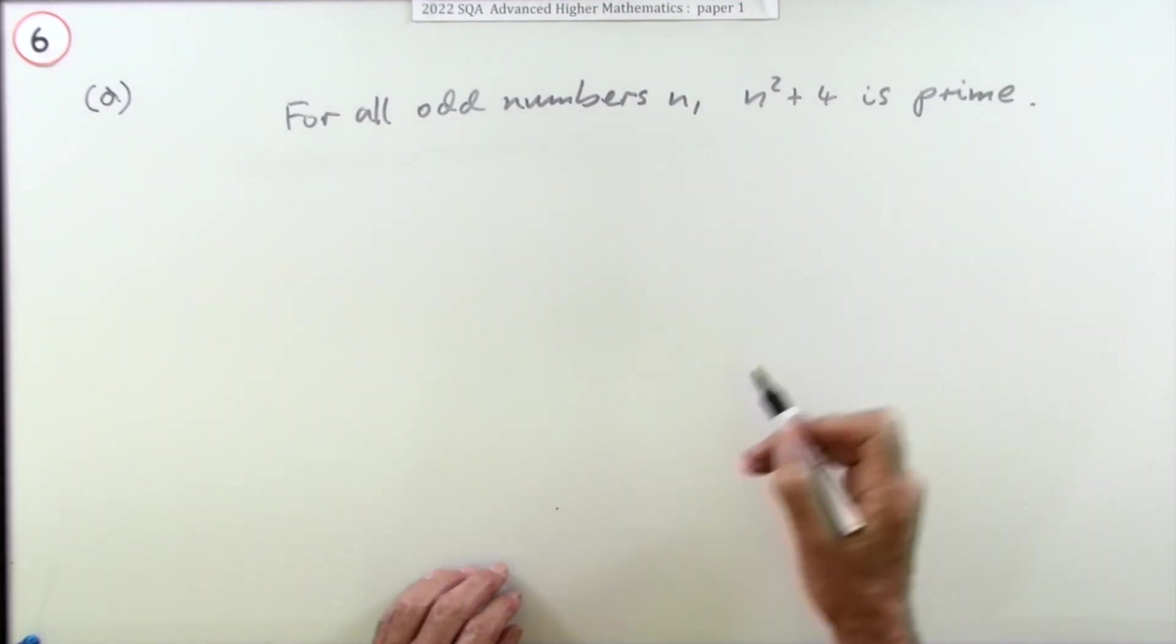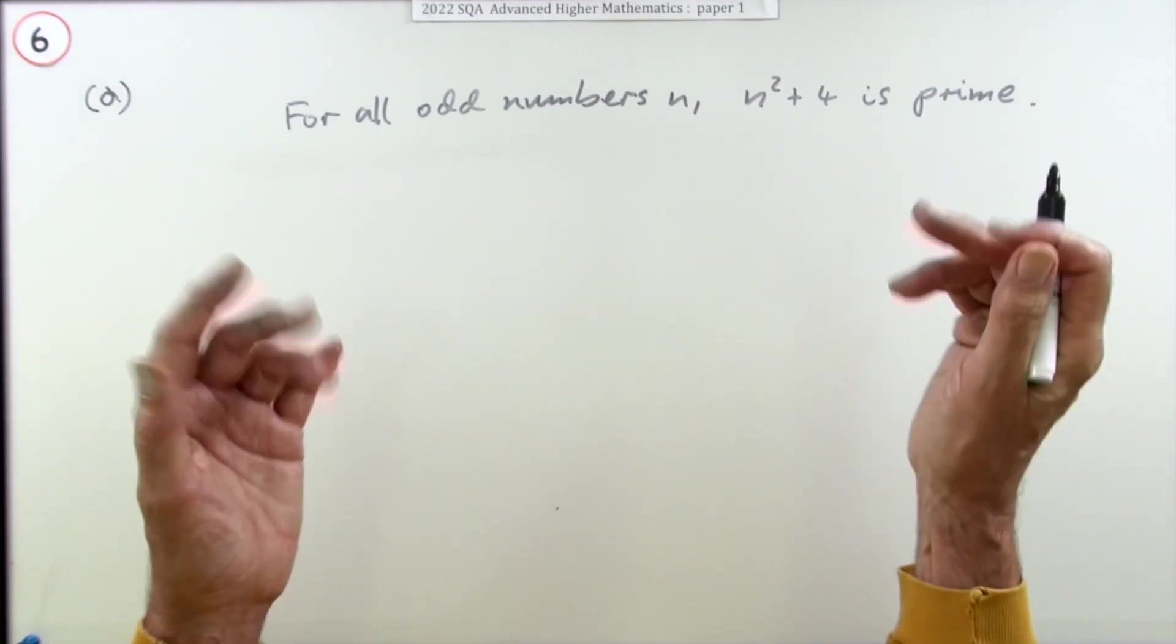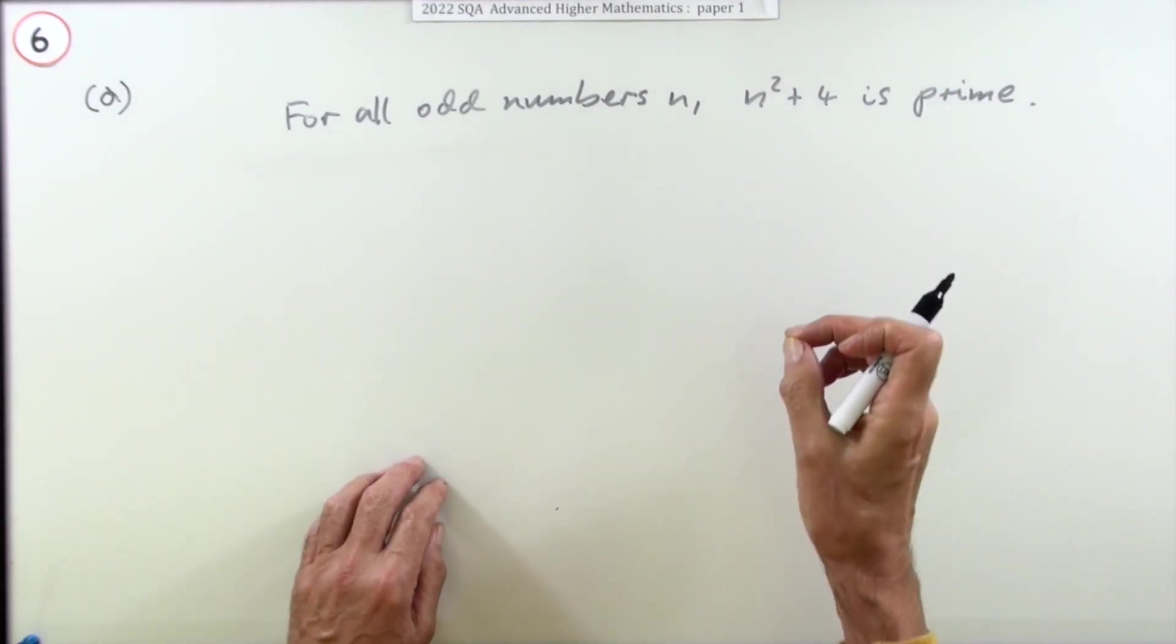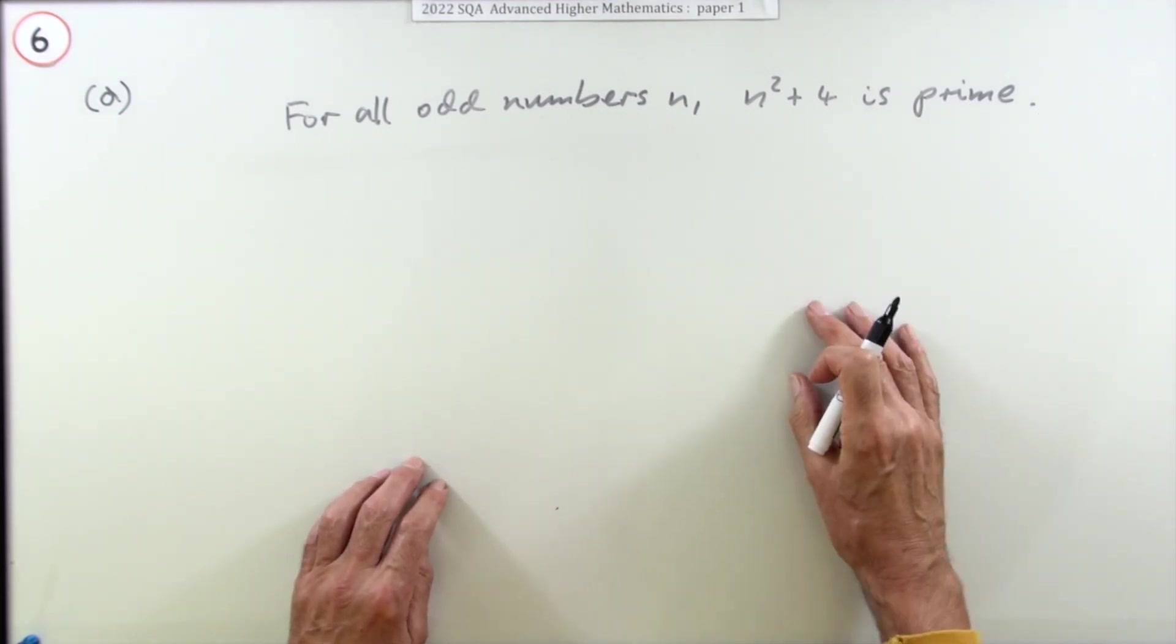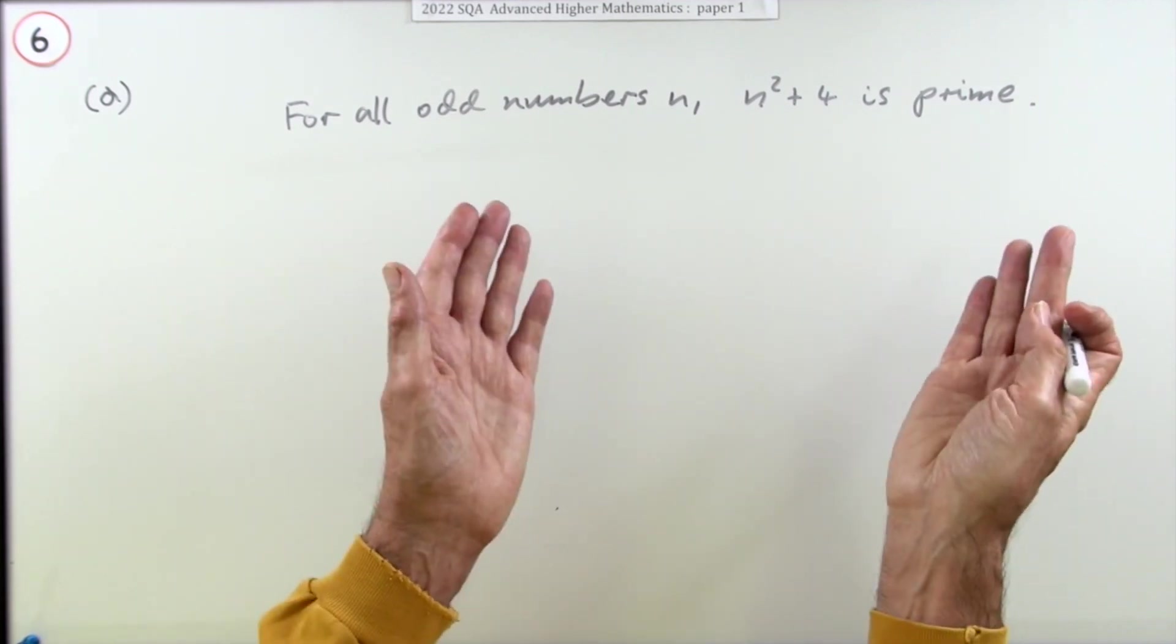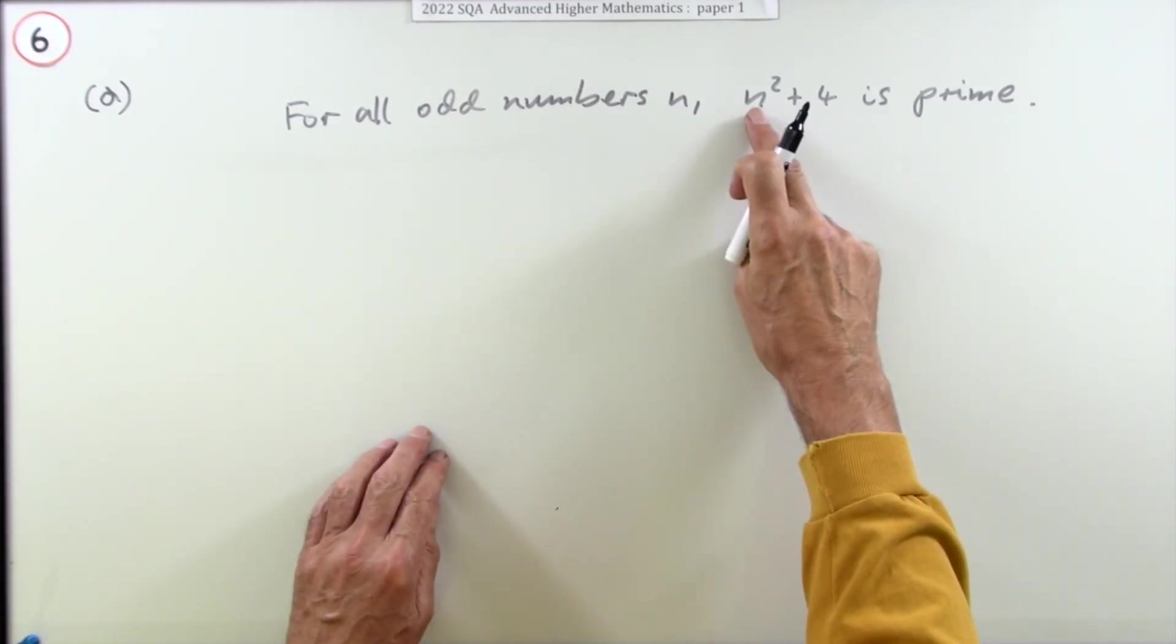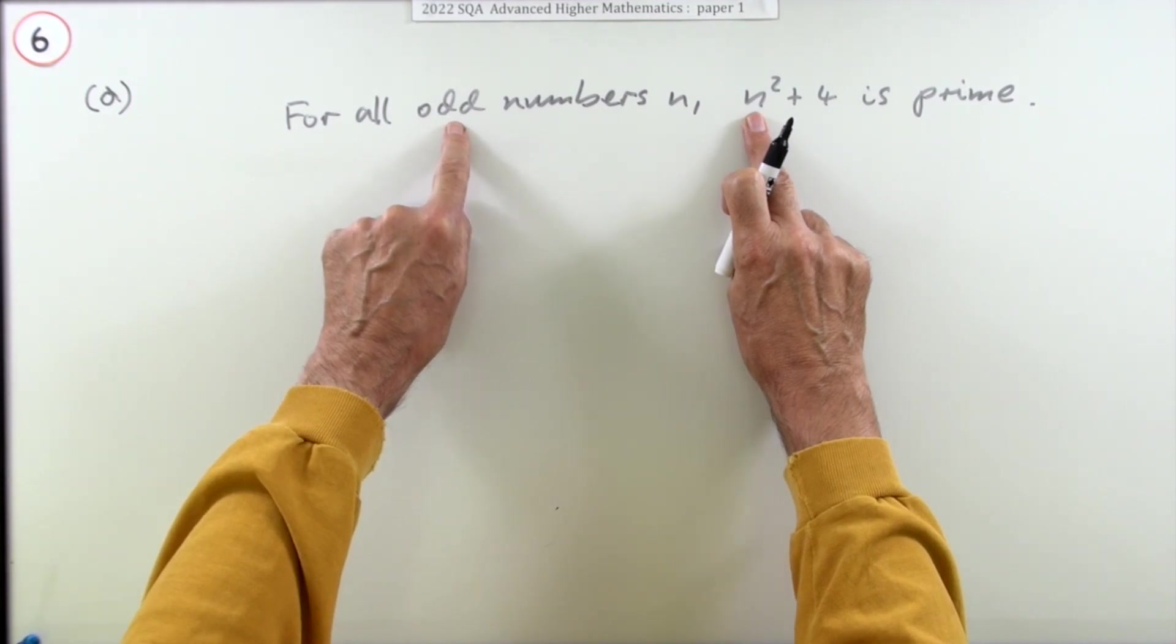You could just start at one, the first odd number, and it wouldn't take you long to get the answer. If you were to employ a technique, you could say what are the readily identifiable non-prime numbers, that is composite numbers? Well, even numbers, but that's no use. The squares of odd numbers are all odd, so that's out.